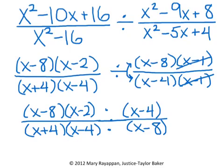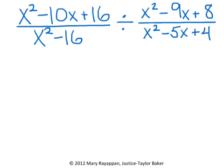Just like we did above, we can start simplifying any factors that we see in both the top and bottom. You notice we have an x minus 8 here in the top and one in the bottom, so they can cancel out. We also have x minus 4 in both, so they cancel. So we are left with x minus 2 over x plus 4, which means the original problem we had, x squared minus 10x plus 16 over x squared minus 16 divided by x squared minus 9x plus 8 over x squared minus 5x plus 4, will simplify down to x minus 2 over x plus 4.